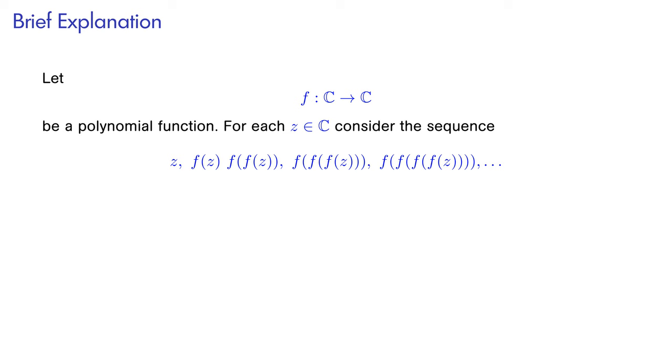You can use this recipe again and again to get a sequence of points. So we start with a point z, then form f(z), and we apply f to it again so that we have f(f(z)), and so on.